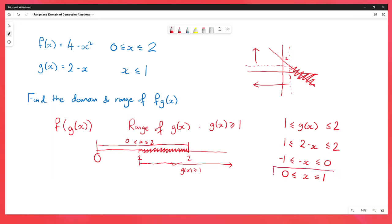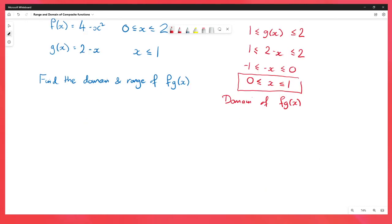We're going to get that x is between 0 and 1. This is the domain of fg of x. Now we have the domain of fg of x, we can work out the function fg of x using our normal composite function method.